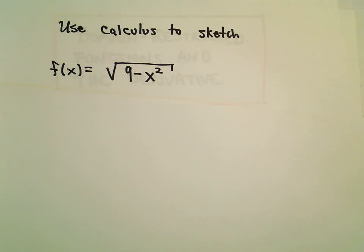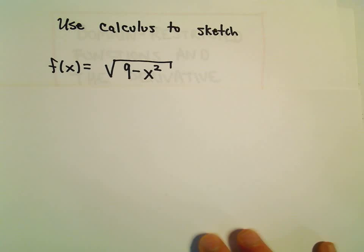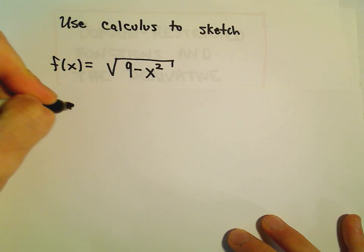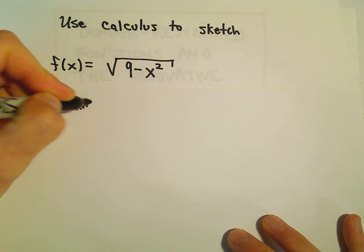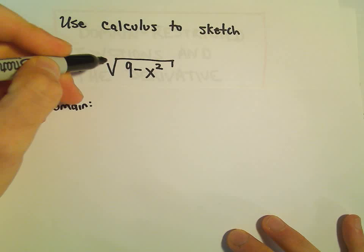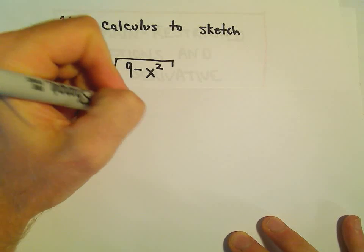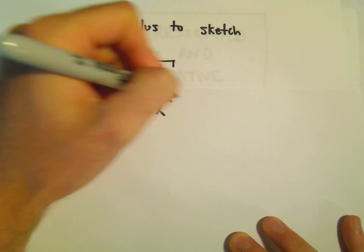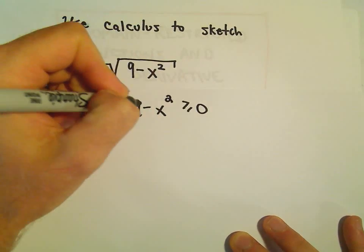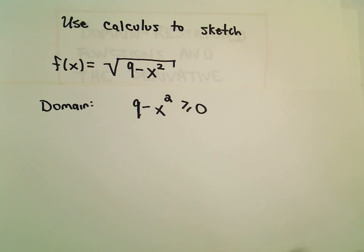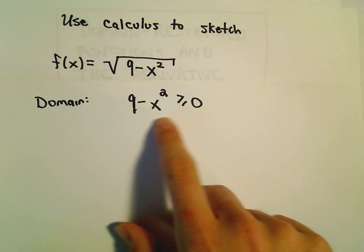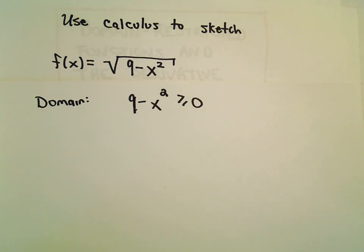The first thing I'm going to think about is the domain. Just like the previous example, since we have a square root, whatever is underneath the square root has to be greater than or equal to 0. You've got to be a little careful here — recall, how do we solve a quadratic inequality?